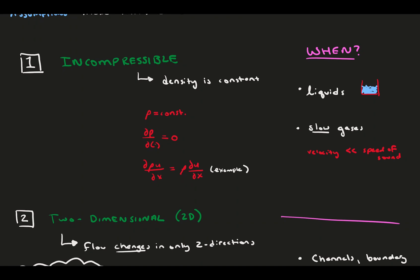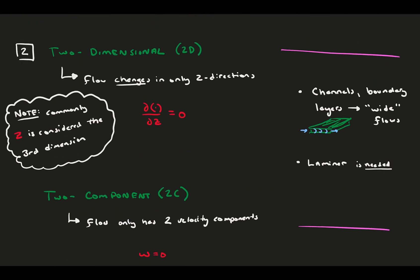Incompressible means density is constant and it's for liquids and slow gases. Two-dimensional and two-component means nothing changes in z and there is no w velocity, common for channels and boundary layers.